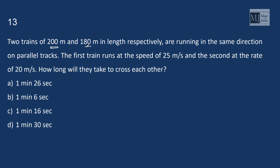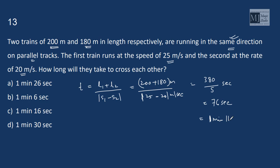Two trains, L1 and L2 in length are running in the same direction on parallel tracks. The first train runs at 25 meter per second, second at 20 meter per second. How long will they take to cross each other? Since they are moving in the same direction, time taken to cross each other would be L1 plus L2 upon difference in the speed. That would be 200 plus 180 meters by 25 minus 20 meter per second, that is 380 by 5 second, that is 76 seconds.